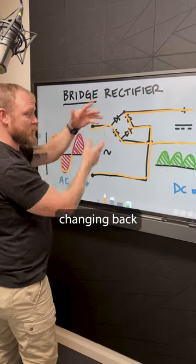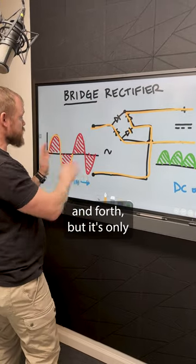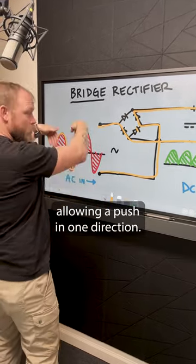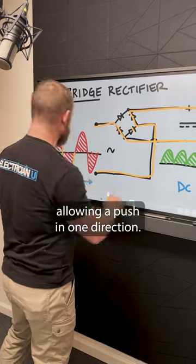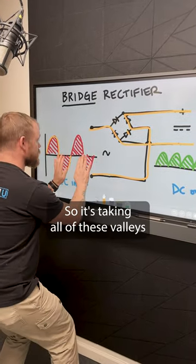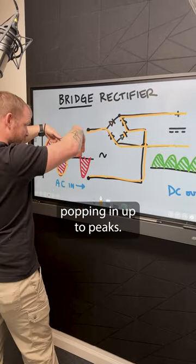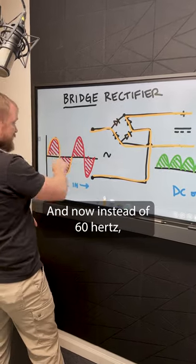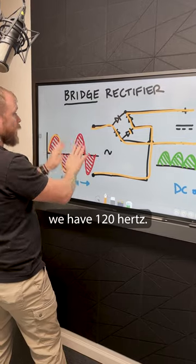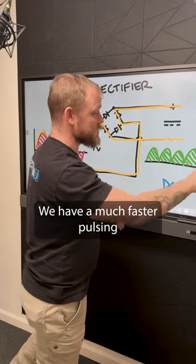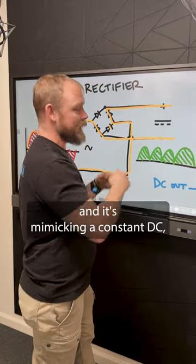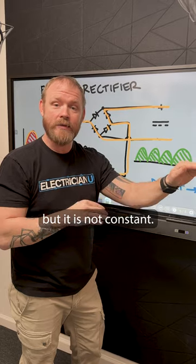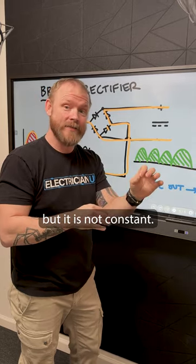So it's constantly changing back and forth, but it's only allowing a push in one direction. It's taking all of these valleys, popping them up to peaks, and now instead of 60 hertz, we have 120 hertz. So we have a much faster pulsing and it's mimicking a constant DC, but it is not constant.